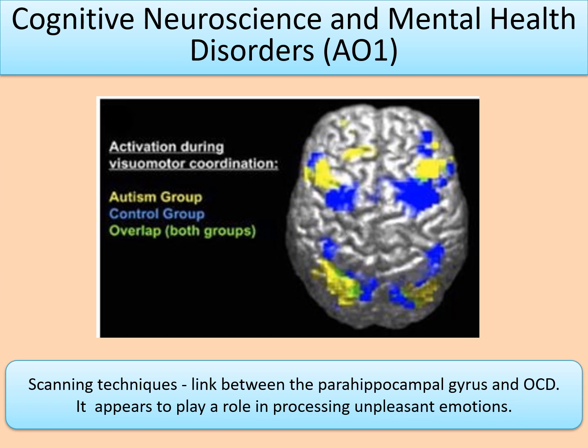Scanning techniques have also been useful in establishing the neurological basis of some mental disorders. There's a found link between the parahippocampal gyrus and OCD — it appears to play a role in processing unpleasant emotions. Cognitive neuroscience can establish brain structures that might be important for particular mental health disorders, really showing how there is a neurological basis for some mental health conditions.